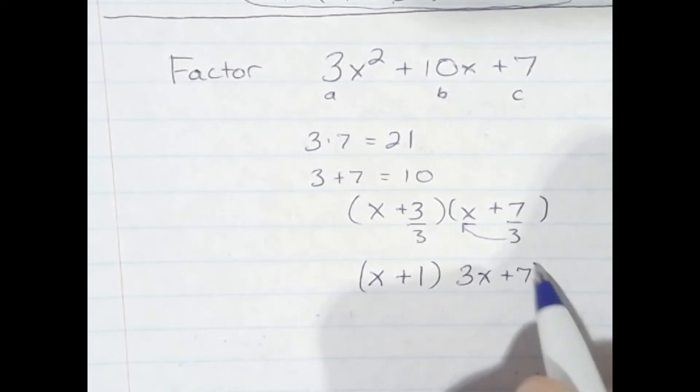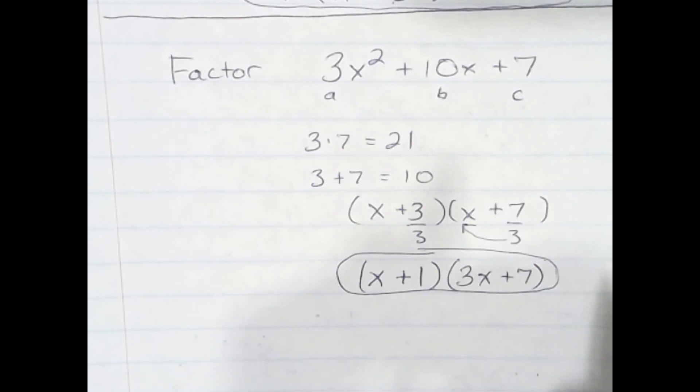3x plus 7. And that is the factored form of the quadratic trinomial given.